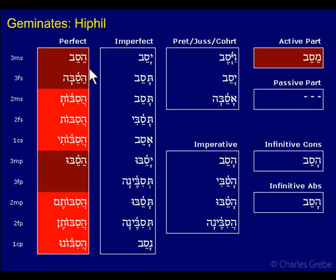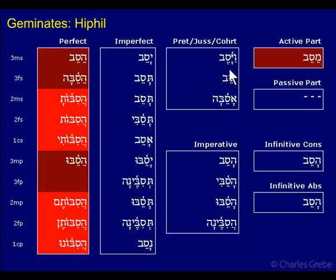The theme vowel is tsere through all these forms. Now here it's reduced. You go yasev, yasev, and then for the preterite vayasev — but we've seen that many times. We have a shift of the accent and a reduction from tsere to segol. We'll see a reduction here as well.